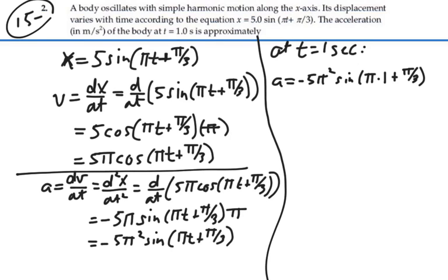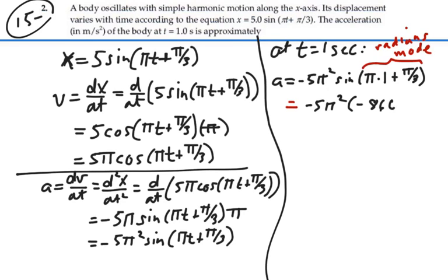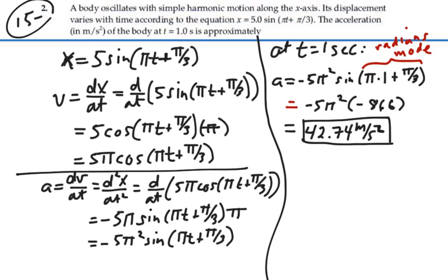Now when we do the calculation for pi plus pi over 3, that's going to be a number in radians, so when we take the sine of that number, we want our calculator to be in radians mode. So we have negative 5 pi squared, and the sine term gives us negative 0.866, so that is equal to 42.74 meters per second squared. That is the acceleration at t equal to 1 second: 42.74 meters per second squared.